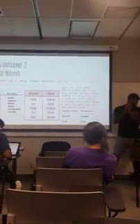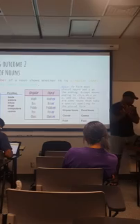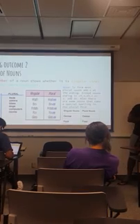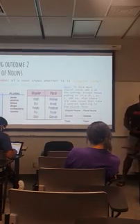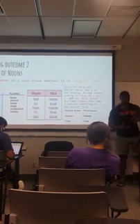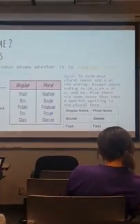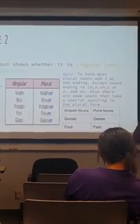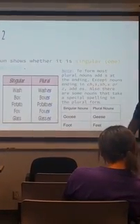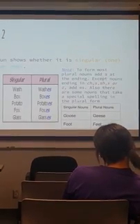Also, some nouns take special spelling. So like goose — you say geese. It's a special spelling. For the one ending in SH, like wash, it has an SH at the end, so you add ES.